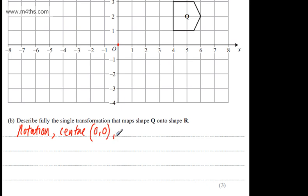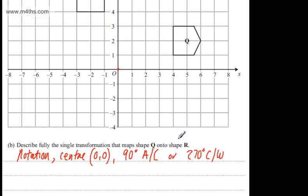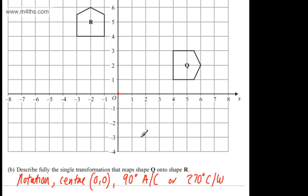And I'm going to say that this is going to be 90 degrees anticlockwise or we could say 270 degrees clockwise. So writing this out, it's a rotation, centre 0, 0, 90 degrees anticlockwise or 270 degrees clockwise.